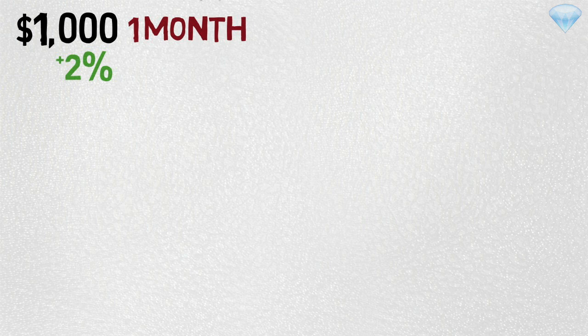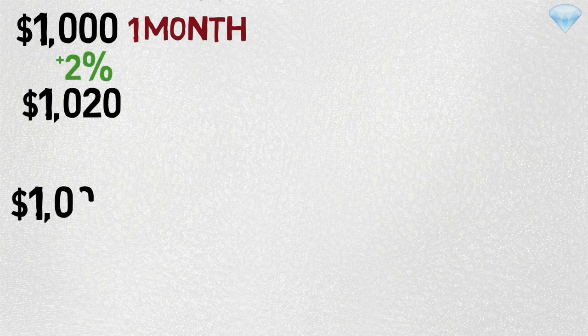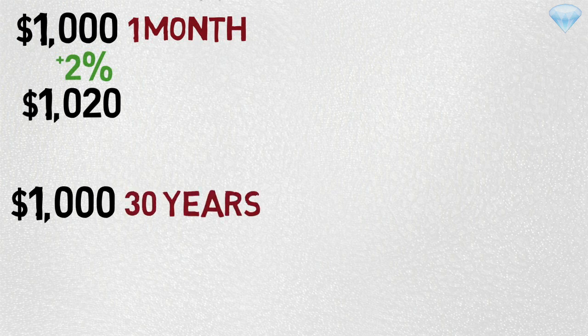To give you a simple analogy: if I borrow from you $1,000 and I promise to pay you 1 month later plus 2% interest, in 1 month you would receive $1,020. But what if I borrow money from you not for 1 month, but for 30 years? You would not see your money for 30 years, which you could have used to make some profitable investment decisions.